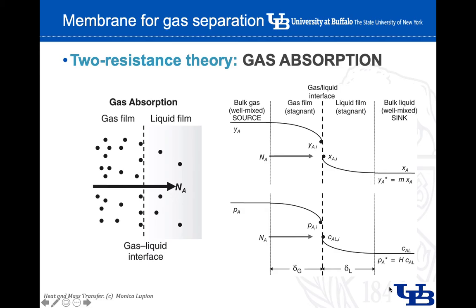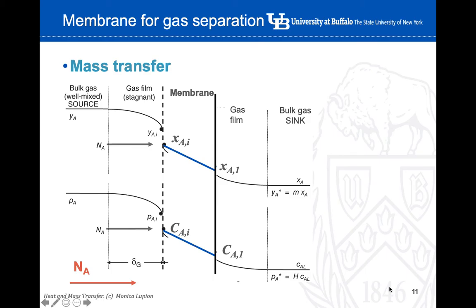If you recall when we studied these convective coefficients and mass transfer between phases, we mentioned the two-resistant theory. This diagram defines the transportation of the flux of molecule A from the gas to the liquid phase, and we define this gas-liquid interface. The source and the sink are shown, and at the interface we assume ideal equilibrium conditions.